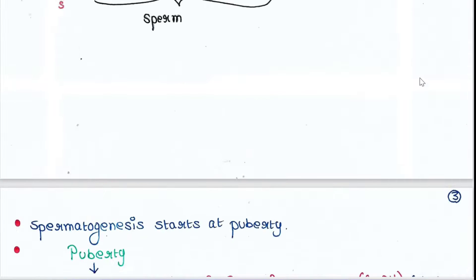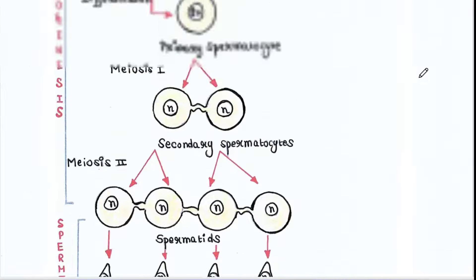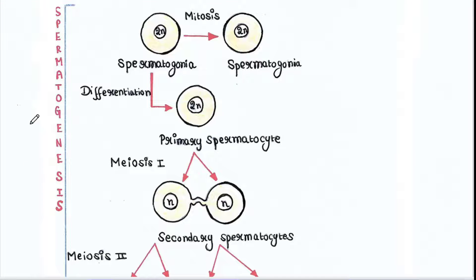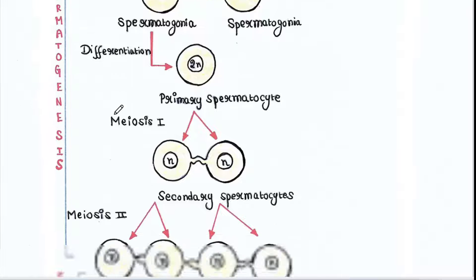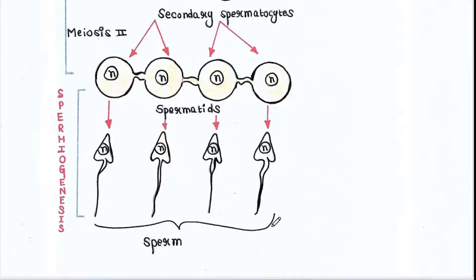So in our last lecture, we have already talked about spermatogenesis and we have seen that the development of mature sperm from spermatids is called spermiogenesis. So today we will see what actually happens in spermiogenesis.